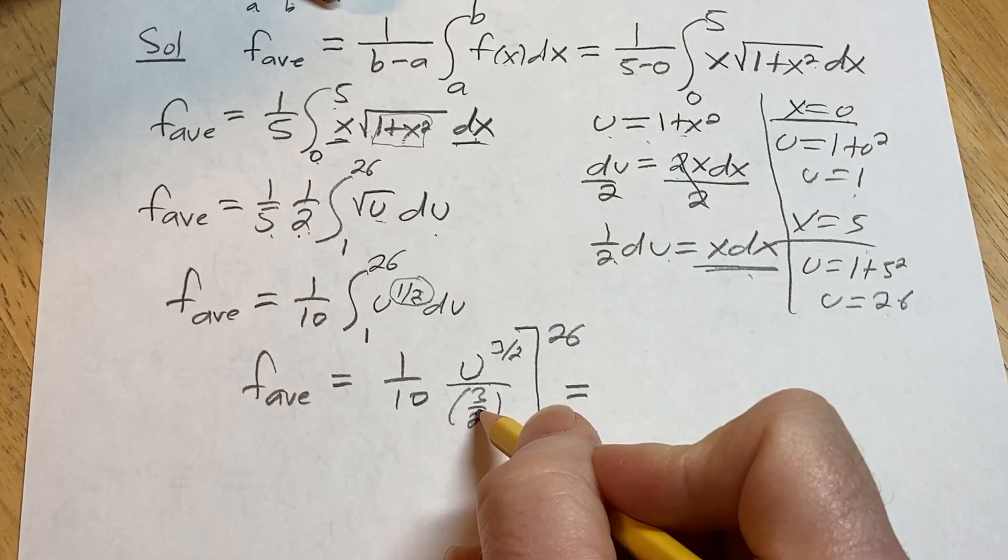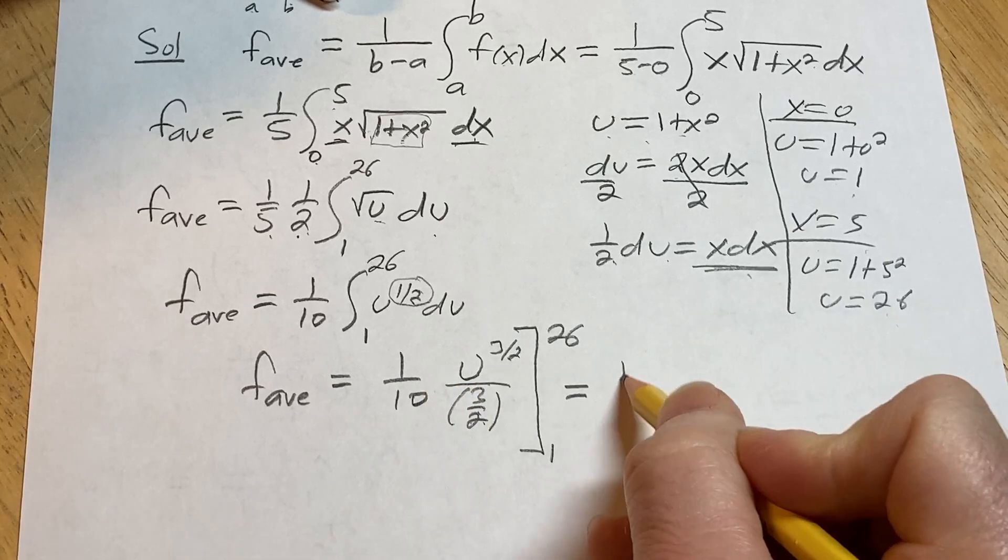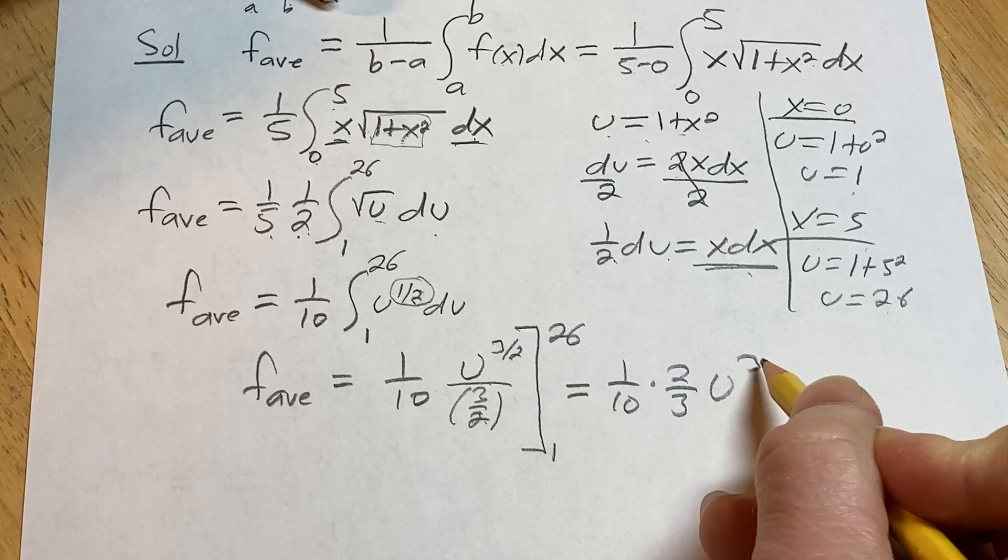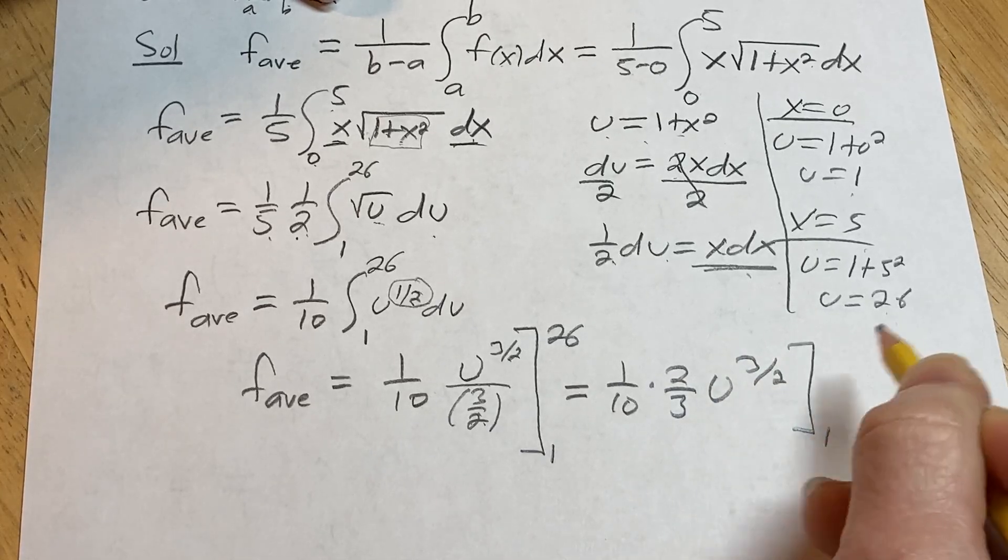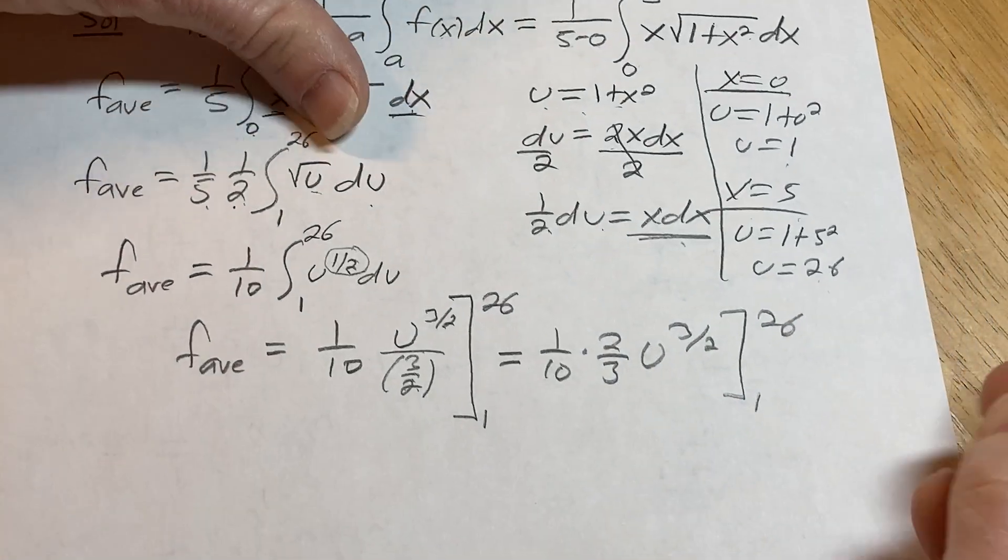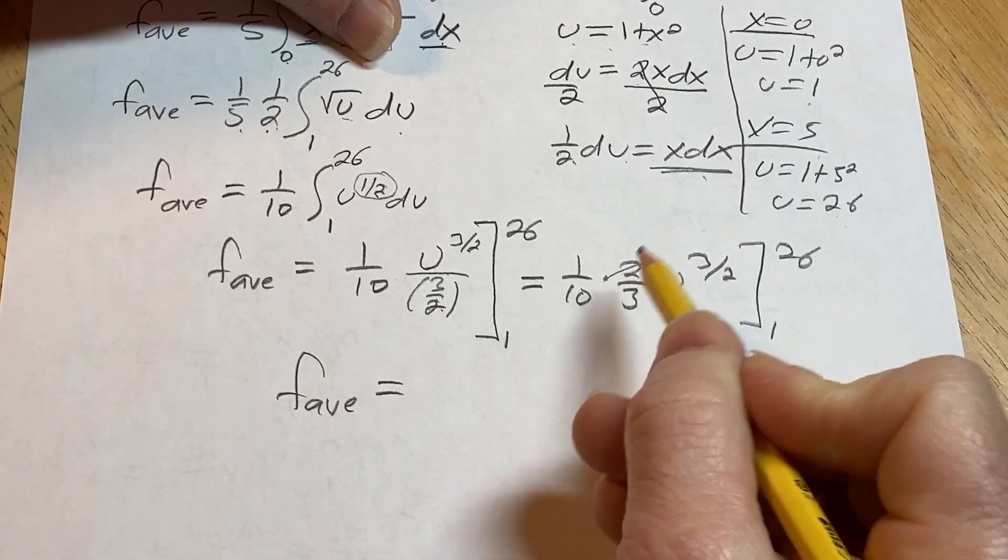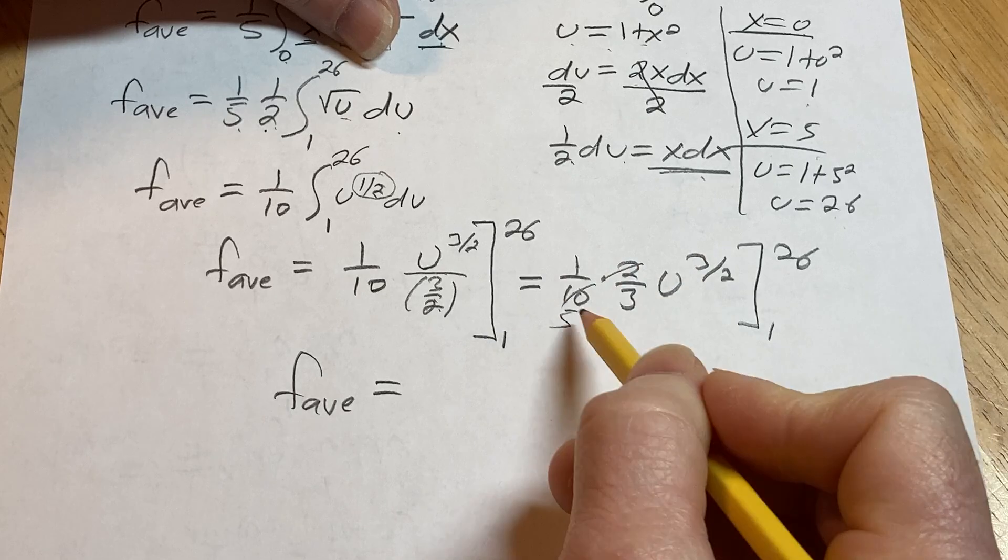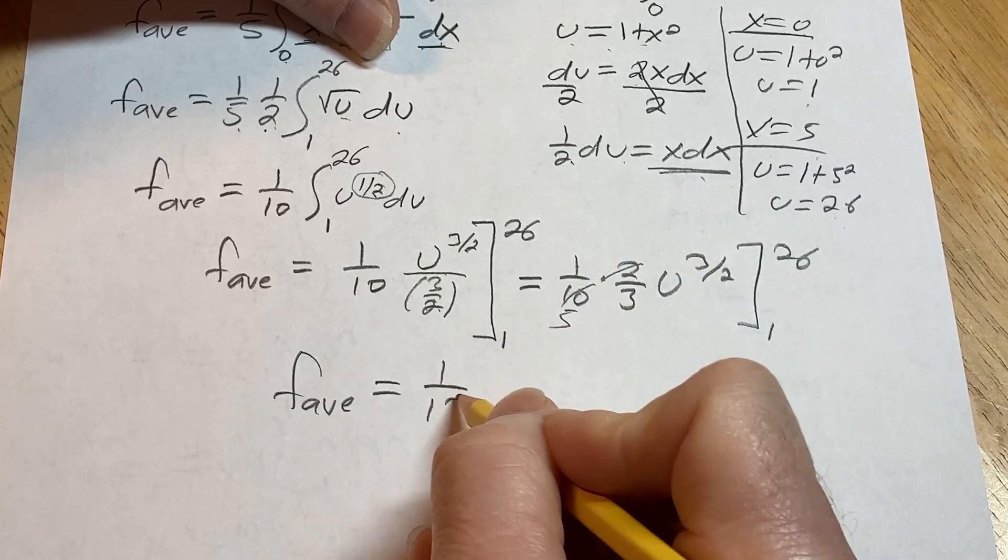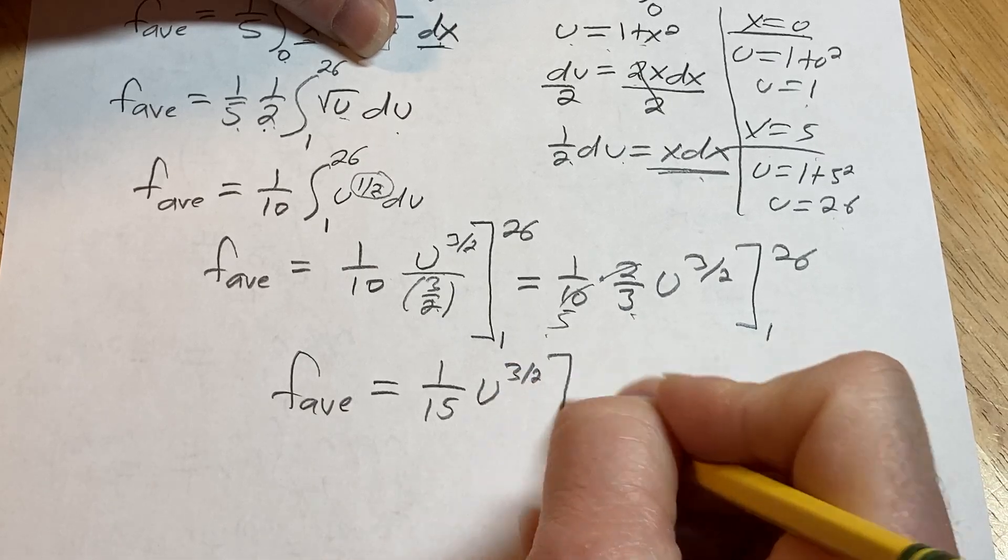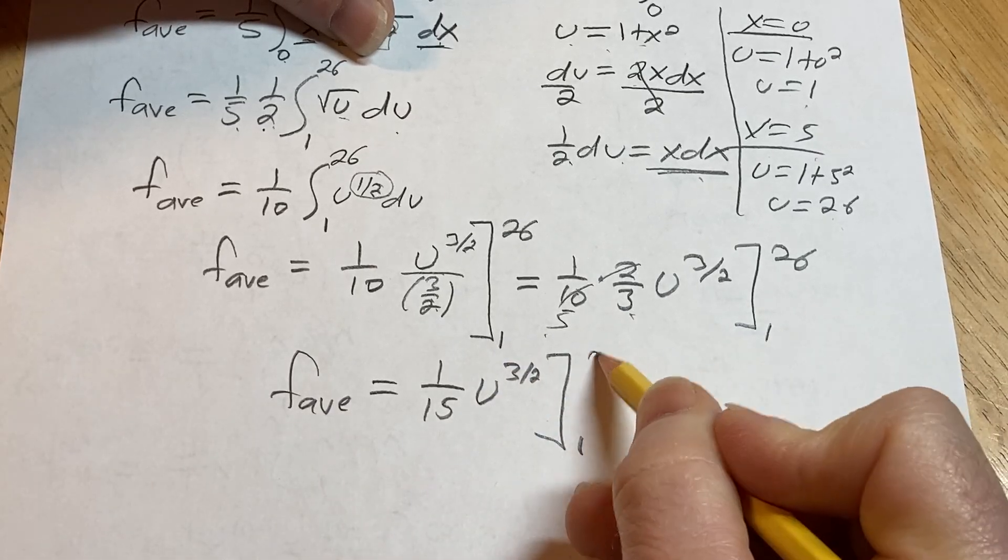This is equal to, so when you divide by 3 halves, you multiply by the reciprocal. So it's 1 tenth times 2 thirds, u to the 3 halves, 1 to 26. I love the sound pencils make. This is the average value of a function that's equal to, boom, this is the 5, so you get 1 fifteenth. Yeah, 5 times 3 is 15, it looks okay. u to the 3 halves, and we're going from 1 to 26.